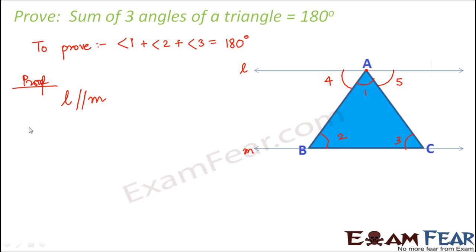Now since l and m are parallel, we can say that angle 4 is equal to angle 2. Can you tell me why? That is because these two are alternate angles. You remember we learned about the alternate angles in our previous lesson—if two lines are parallel and if you have a transversal, so in this case AB is like a transversal for parallel lines l and m, and angle 4 and angle 2 are alternate interior angles. For parallel lines, alternate angles are equal.